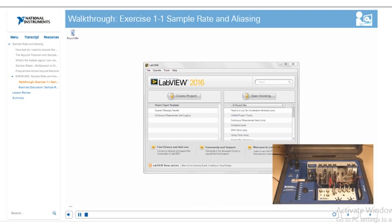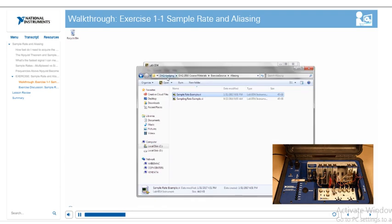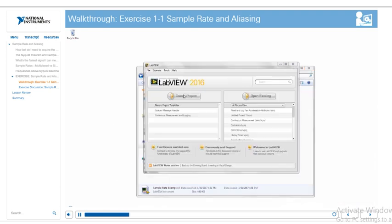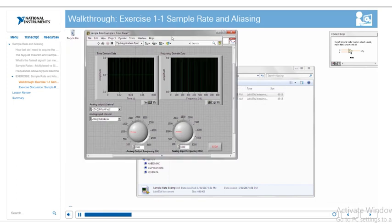This is the solution walkthrough for exercise 1-1. So, with this exercise, if you have the compact DAC hardware, we connected wires to the analog output channel 2 on the 9263, and the analog input channel 2 of the 9215 module. As you can see here, I've already connected those up. So, now, I'll just go to the VI we're supposed to open, and the DAC course materials. So, I've got the sample rate example VI opened up.